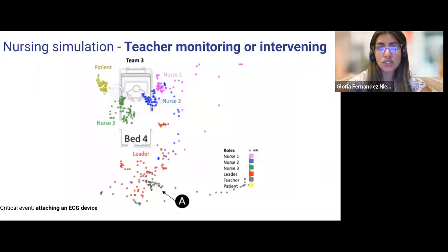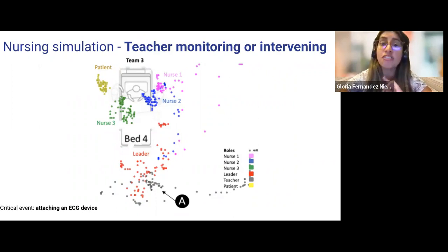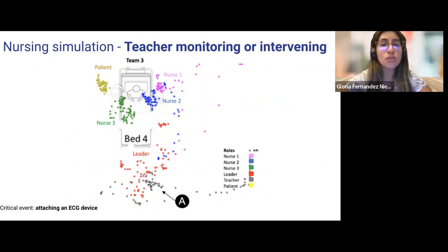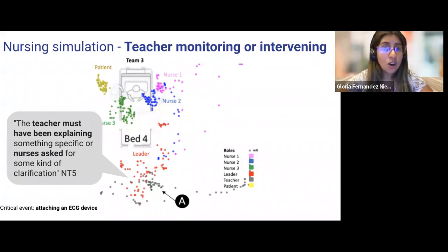Vignette two is a visualization over one minute of a teacher and four nursing students playing different roles while attaching an ECG device. When the five teachers were asked to explain the situation using this figure, four out of five interpreted that the role of the teacher was actively involved in helping and guiding nurses through the process by focusing on point A. They justified their interpretations by indicating the nurses may need a little bit of guidance and reassurance from the teacher, or that the teacher must have been explaining something specific, or nurses should be asking for additional clarifications.